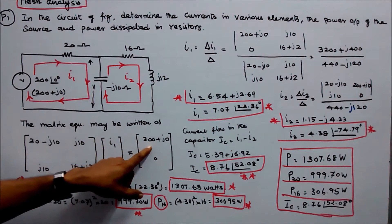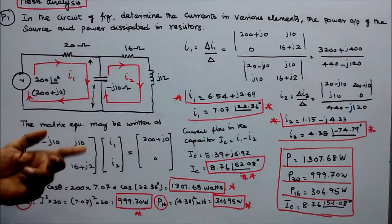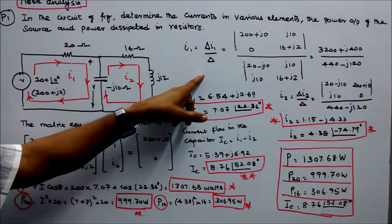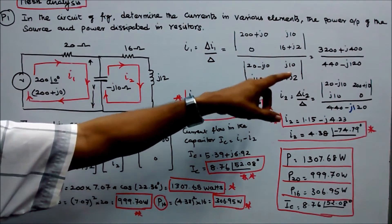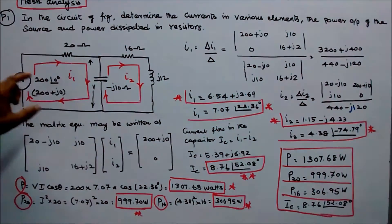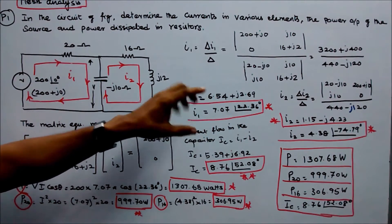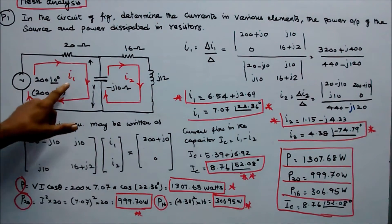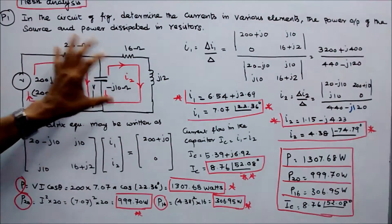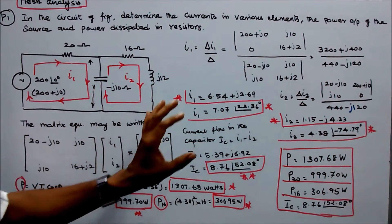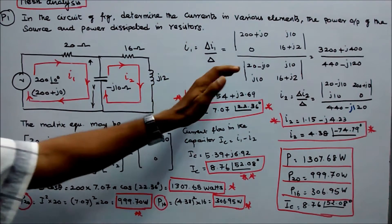Since the current directions are opposite, the off-diagonal term is plus j10. The matrix equation gives V1 = 200 + j0 for loop 1, and zero for loop 2 (no source). Solving, i1 equals delta_i1 divided by delta, which equals (3200 + j400) divided by (440 minus j120), giving i1 = 6.54 + j2.69 amps (rectangular), or 7.07 angle 22.36 degrees (polar). Similarly, i2 = 1.15 minus j4.23 amps (rectangular), or 4.38 angle minus 74.79 degrees (polar).